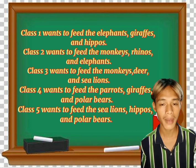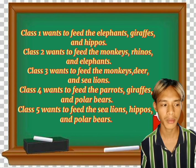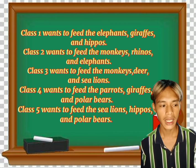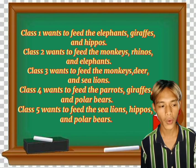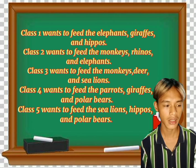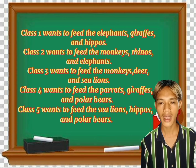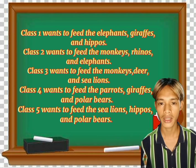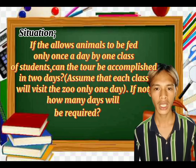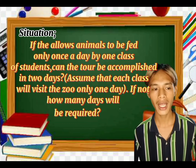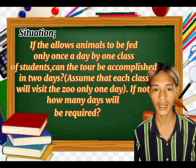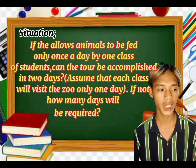Class two wants to feed the monkeys, rhinos, and elephants. Class three wants to feed the monkeys, deer, and sea lions. Class four wants to feed the parrots, giraffes, and polar bears. Class five wants to feed the sea lions, hippos, and polar bears. The question is: if the zoo allows animals to be fed only once a day by one class of students, can the tour be accomplished in two days? And if not, how many days will be required?